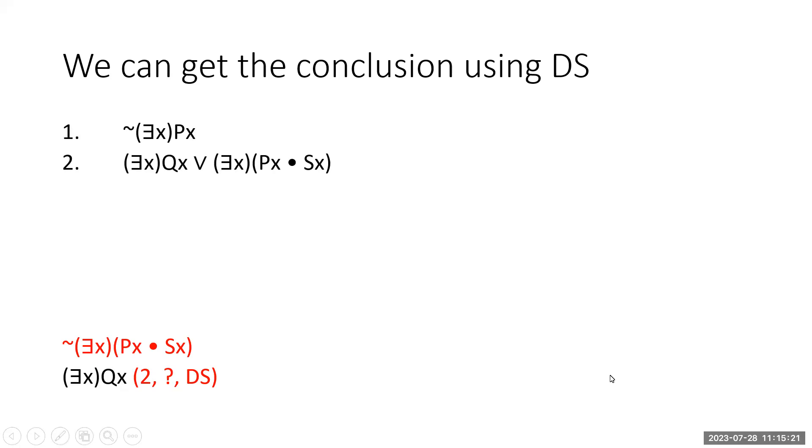But in order to use disjunctive syllogism, you're going to need to come up with somehow the negation of that second disjunct. So we're going to need to show somehow that it's not the case that something is both P and S.